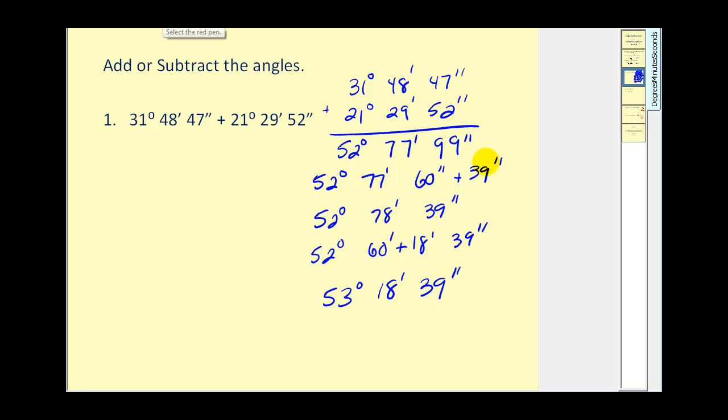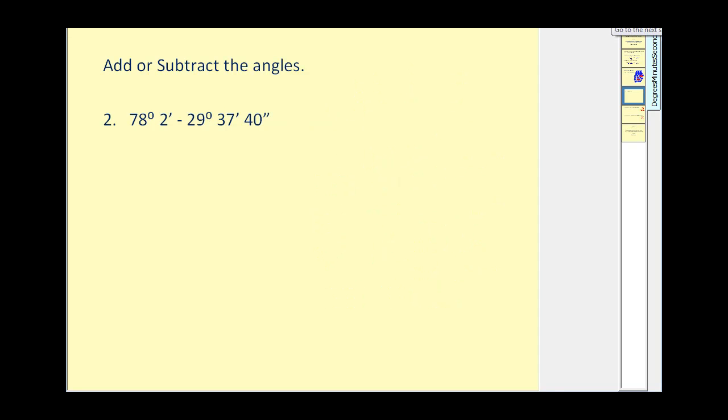So again, what we did is first we simplified our seconds to minutes and seconds. And then we converted our minutes to degrees and minutes. Now let's take a look at a similar process for subtraction of angles written in degrees, minutes, and seconds.